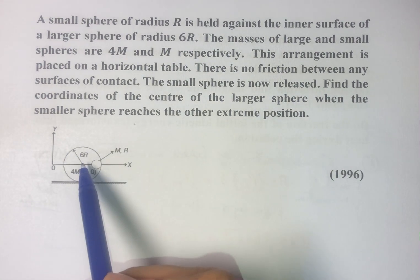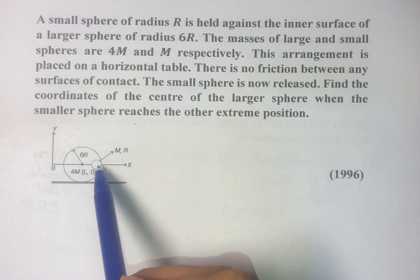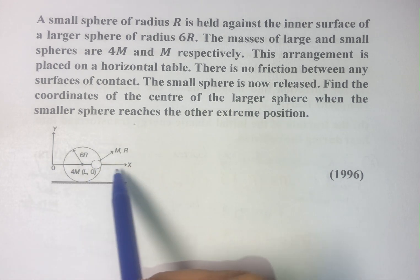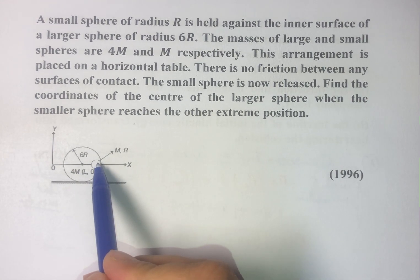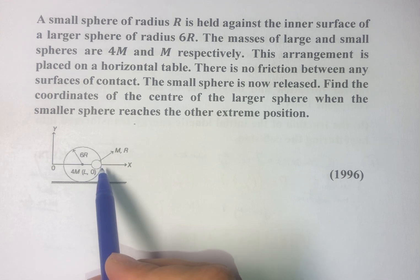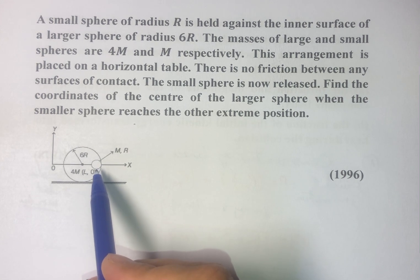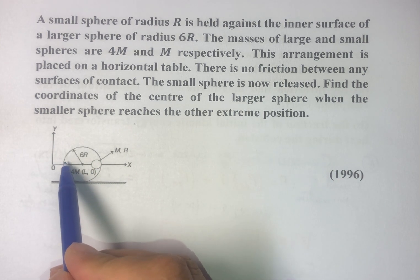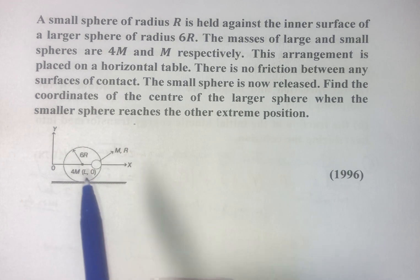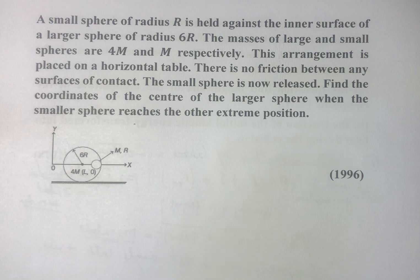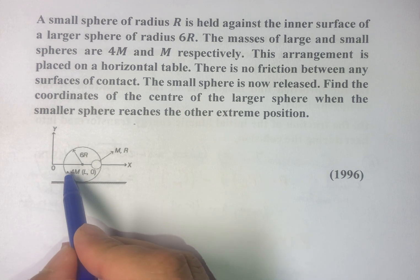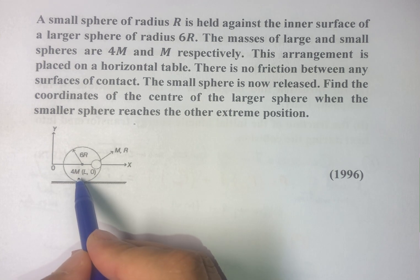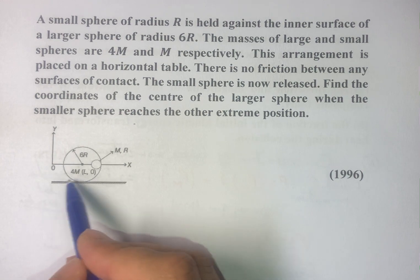We have this bigger sphere of radius 6R and a smaller sphere lying on the x-axis along the radius. We have to find out — the initial position is on the extreme right, and we have to find out the coordinates of the center of the larger sphere when this small mass is released and reaches the other extreme, that is, on the left side of the axis. As the small mass travels inside the bigger sphere, the bigger sphere is also going to make some movement toward the left.